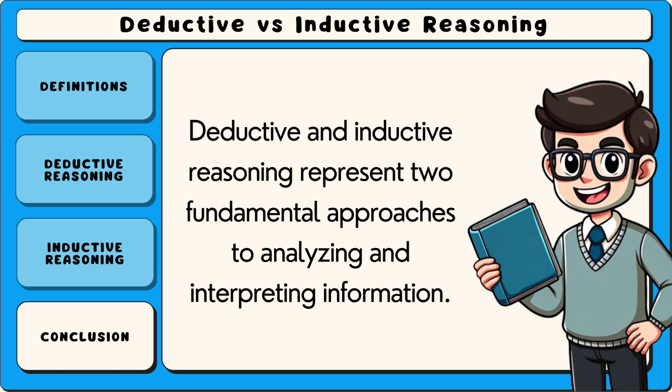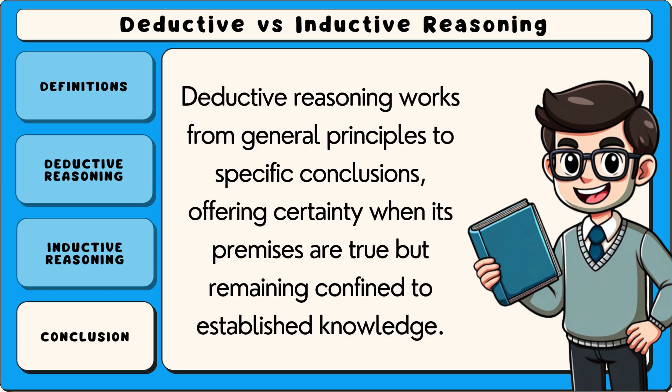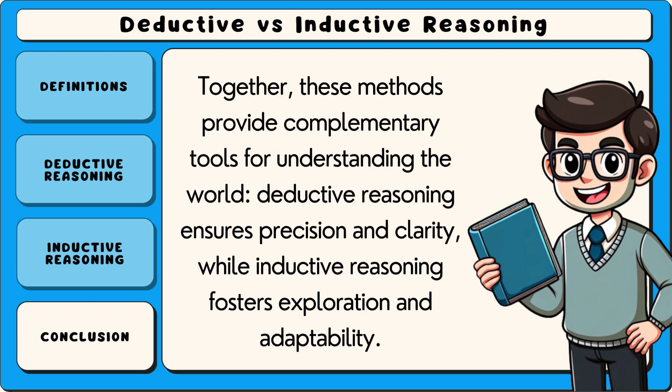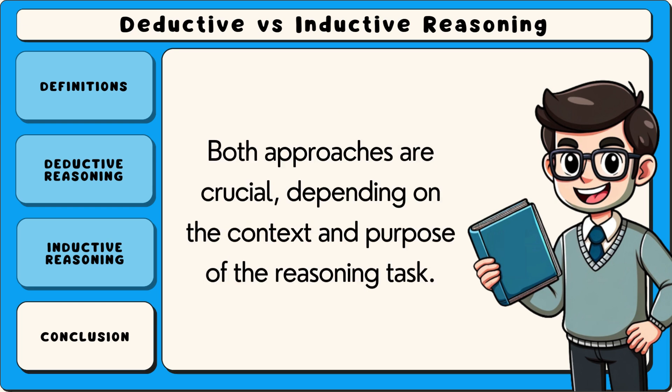Deductive and inductive reasoning represent two fundamental approaches to analysing and interpreting information. Deductive reasoning works from general principles to specific conclusions, offering certainty when its premises are true but remaining confined to established knowledge. In contrast, inductive reasoning moves from specific observations to broader generalisations, making it an essential tool for discovery and innovation but leaving room for uncertainty. Together, these methods provide complementary tools for understanding the world. Deductive reasoning ensures precision and clarity, while inductive reasoning fosters exploration and adaptability. Both approaches are crucial depending on the context and purpose of the reasoning task.